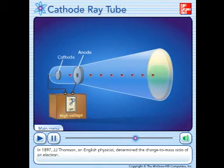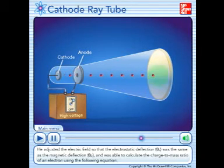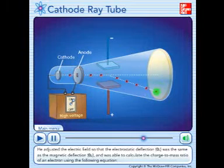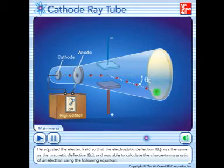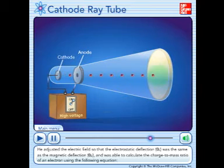In 1897, J.J. Thomson, an English physicist, determined the charge to mass ratio of an electron. He adjusted the electric field so that the electrostatic deflection, theta E, was the same as the magnetic deflection, theta B, and was able to calculate the charge to mass ratio of an electron using the following equation.